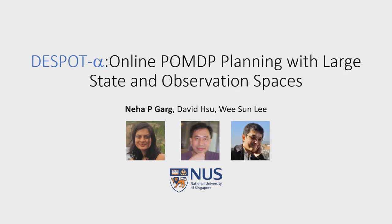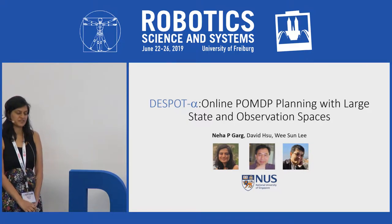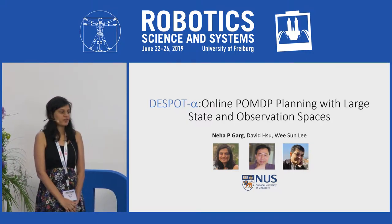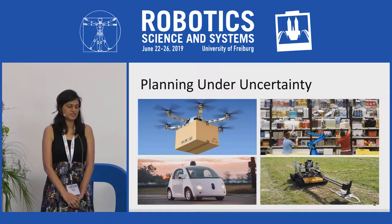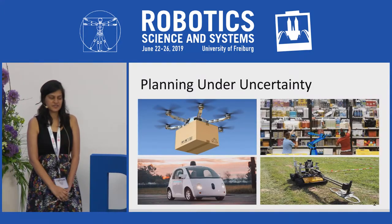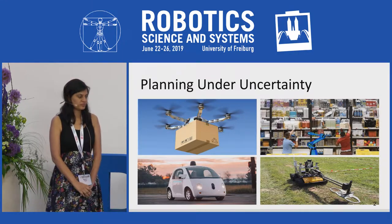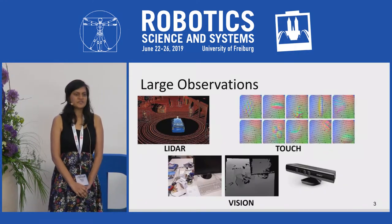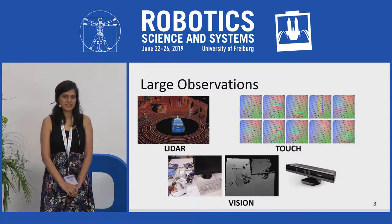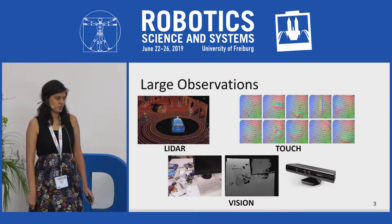Hi, I'm Neha from National University of Singapore, and today I will be talking about DESPOT Alpha. Real-world robots often have to do planning under uncertainty, and partially observable Markov decision processes, that is POMDPs, provide a principled way of doing so. However, when observation space is large, which is often the case with sensors like LiDAR, vision, and touch, state-of-the-art POMDP solvers do not perform well.